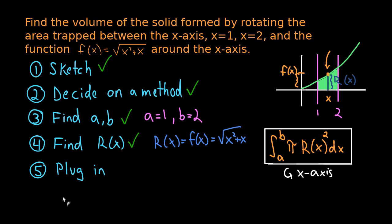We have the integral from a is one to b is two of pi times r(x) is square root of x squared plus x, because it's just the same thing as the function. And we have to square that according to the formula. This bit is r(x) that we figured out in step four. According to the formula, we have to plug that in and then square it.